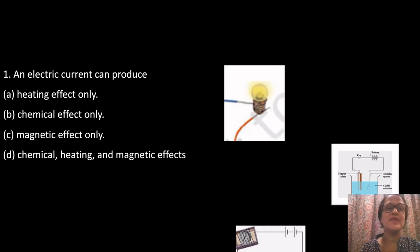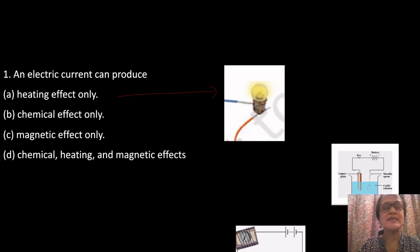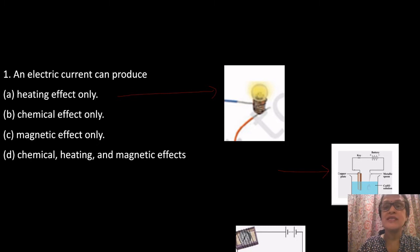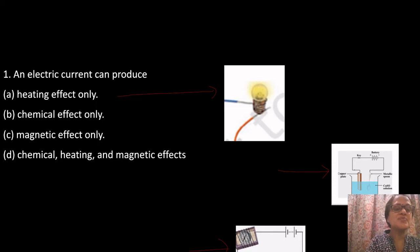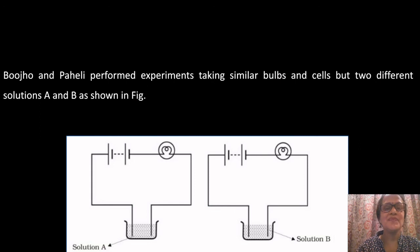My first question is: an electric current can produce — given 4 options. Electric current can produce a heating effect; a glowing bulb is an example. It can also produce a chemical effect; electrolysis and electroplating are examples. It can also produce a magnetic effect; deflection of a magnetic needle in the presence of electric current is an example. So all three — chemical, heating, and magnetic effects — are correct, making option D the correct answer.